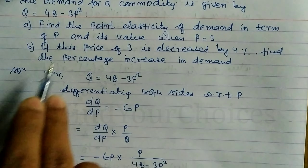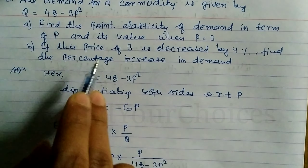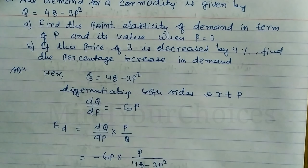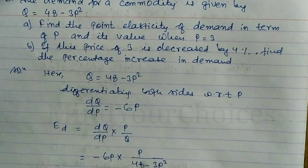Now for question number b: if the price of 3 decreases by 4%, we need to find the percentage change in demand. The old price is 3, and it decreases by 4%.